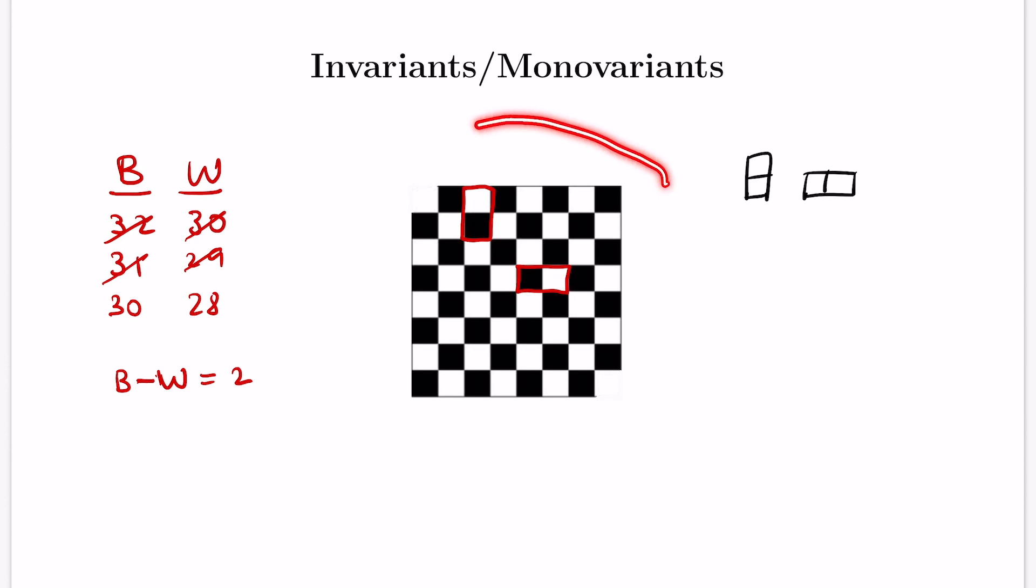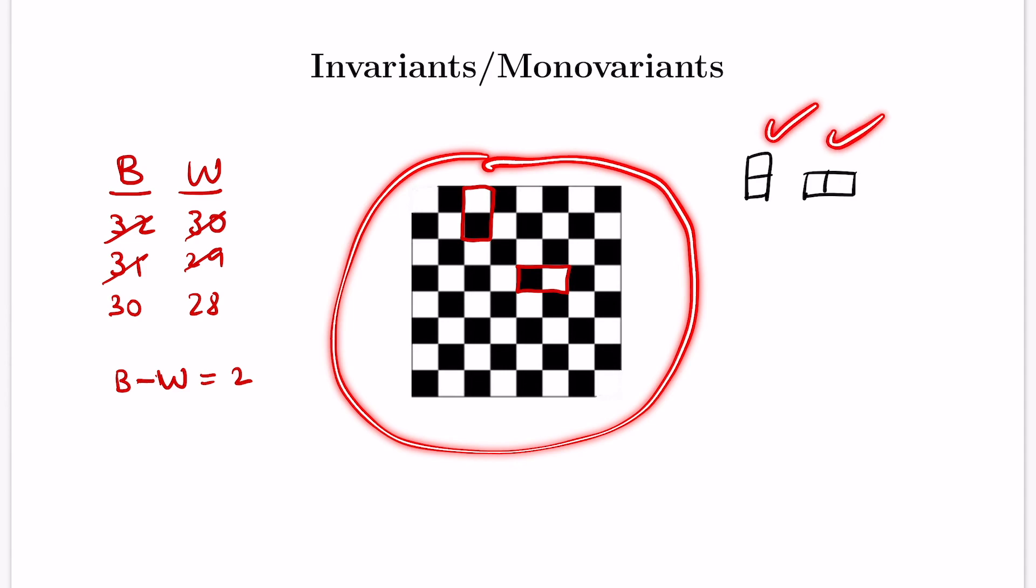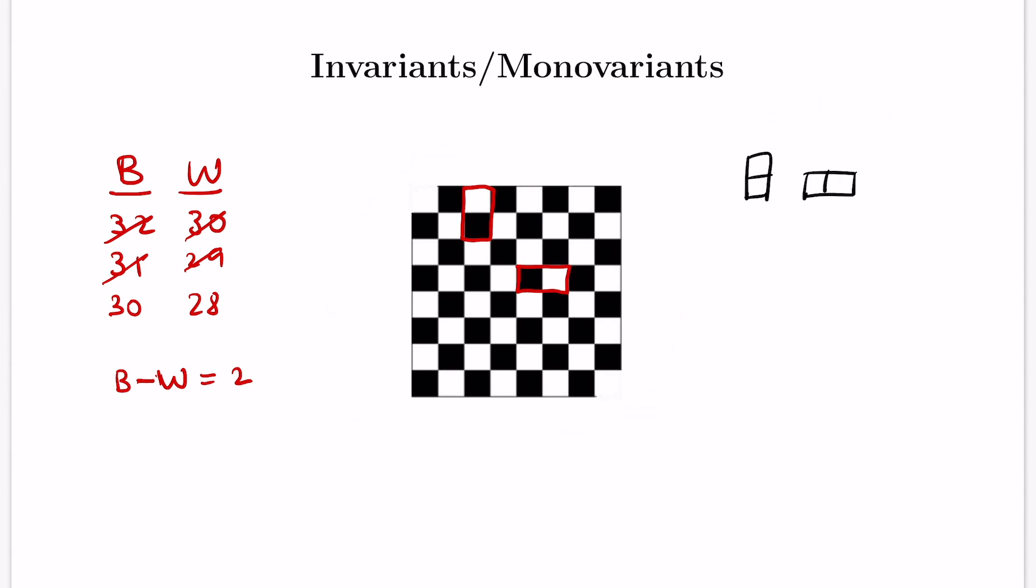We notice that there is something that does not change. No matter what, as we keep placing dominoes, the number of black tiles remaining available is always two more than the number of white ones. Our invariant is the quantity b minus w, the number of black minus the number of white squares remaining as we tile, and that number is always two. But if we could possibly tile this entire thing, at the end we'd have all our spaces covered. So the number of black minus the number of white spaces left uncovered would be zero. But we've just argued that's impossible - no matter how we tile, b minus w is two. So it's impossible to actually tile this board with these two types of dominoes.